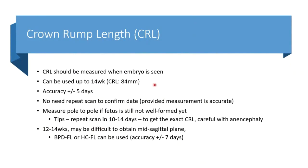Crown-rump length should be measured when you can see the embryo and can be used up to 84 mm, which corresponds to approximately 14 weeks. Accuracy is plus or minus five days. You usually do not need to repeat the scan to confirm the date, provided you obtain a true mid-sagittal view and your measurement is accurate. My tip is to repeat the scan in another 10 to 14 days to get the exact CRL. Be careful when scanning very early — at 8 or 9 weeks — because skull ossification has not occurred yet.